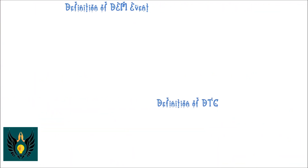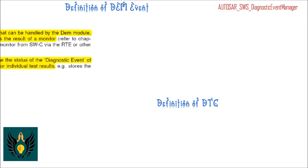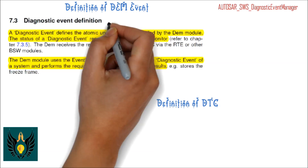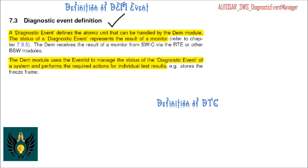Let us first see the definitions of DEM event and DTC given by the AUTOSAR DEM specification document, and then I will try to simplify it. A diagnostic event defines the atomic unit that can be handled by the DEM module. The status of a diagnostic event represents the result of a monitor. The DEM receives the result of a monitor from a software component via the RTE or other BSW modules. The DEM module uses an event ID to manage the status of the diagnostic event and performs the required action for individual test results.